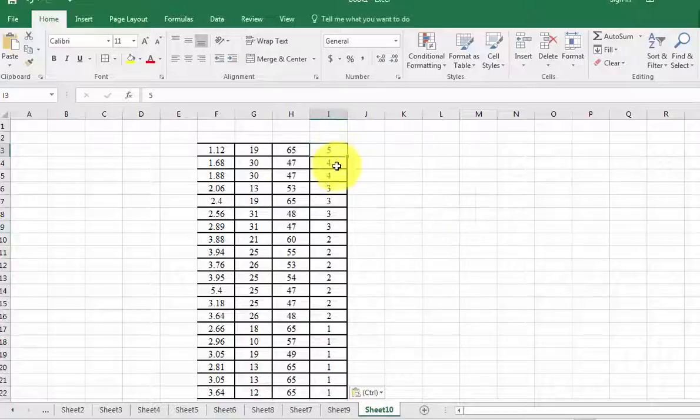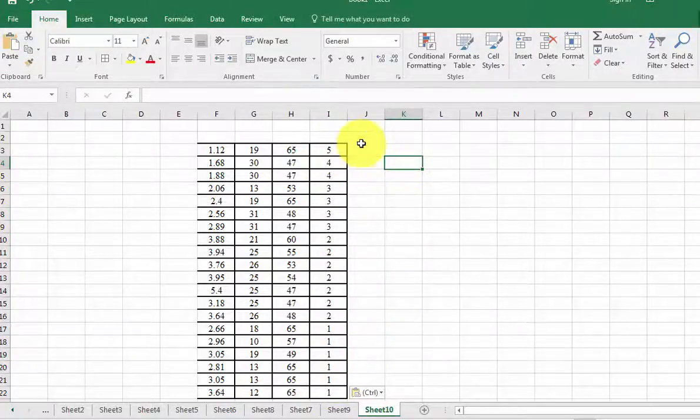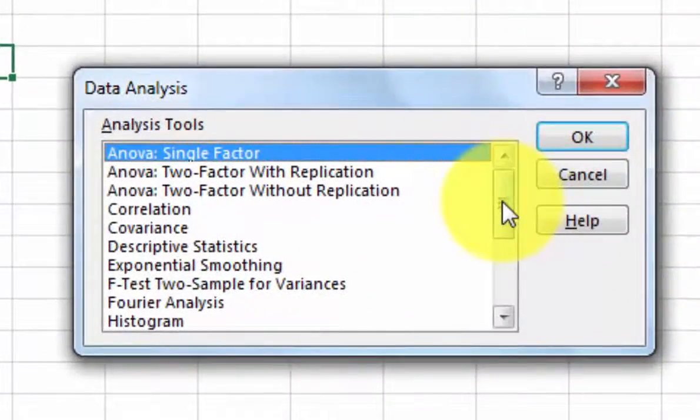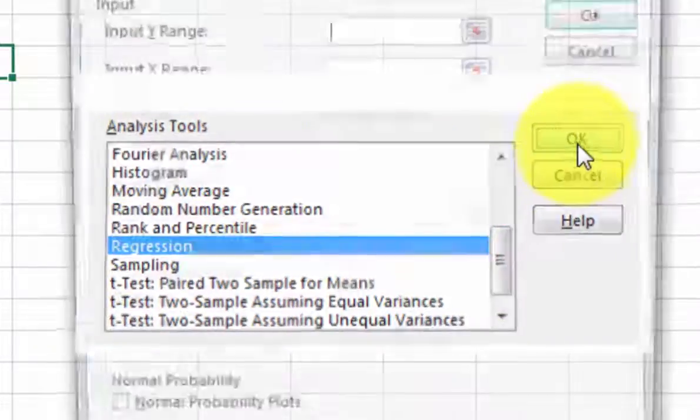So this is what we're trying to predict, how many promotions they've had. So that's going to be our Y value. Let's go ahead and go to Data, Data Analysis, Regression, click OK.